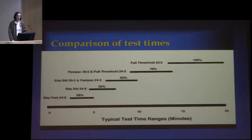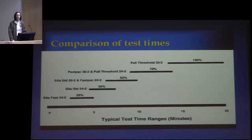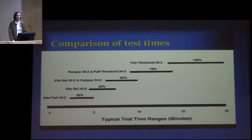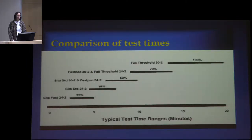This results in a huge variation in the amount of time it takes to do the test. Full threshold testing is really nice but can take up to 20 minutes per eye, which is agony. SITA Standard, if a patient is doing well, can take five or six minutes per eye — much more tolerable. And SITA Fast, with a slight decrement in information, is usually five minutes and under, so you can really speed up the situation by changing your algorithm.